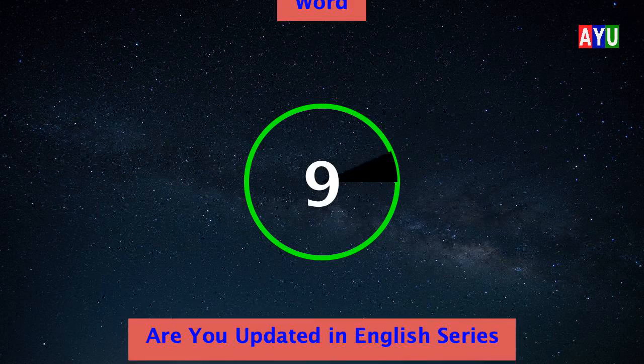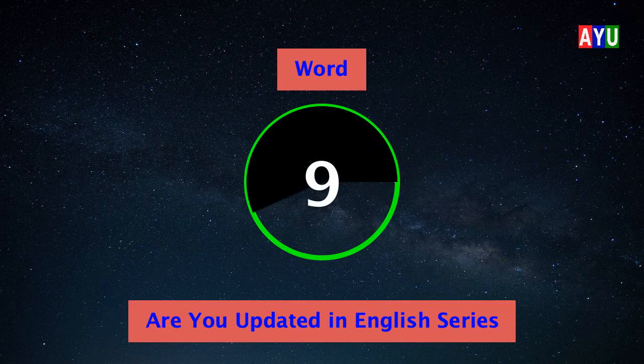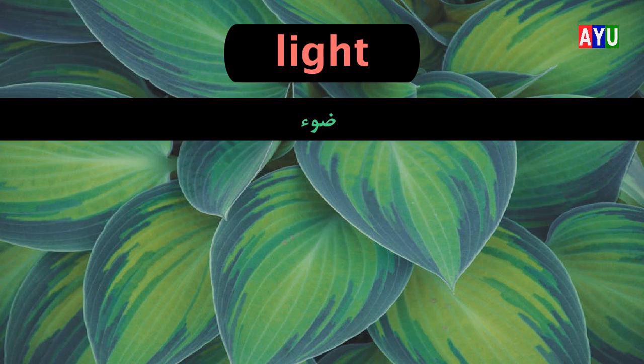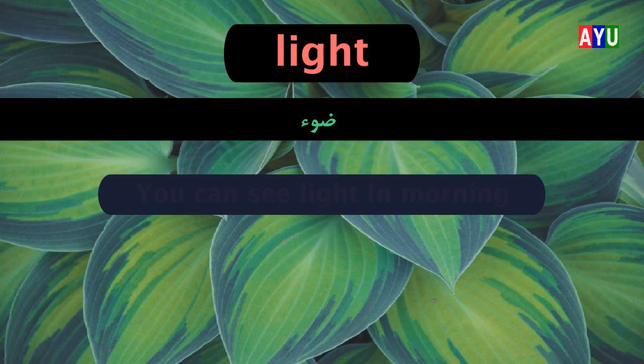Ninth word: Light. Light means Do on. Let's see one example. You can see light in the morning.